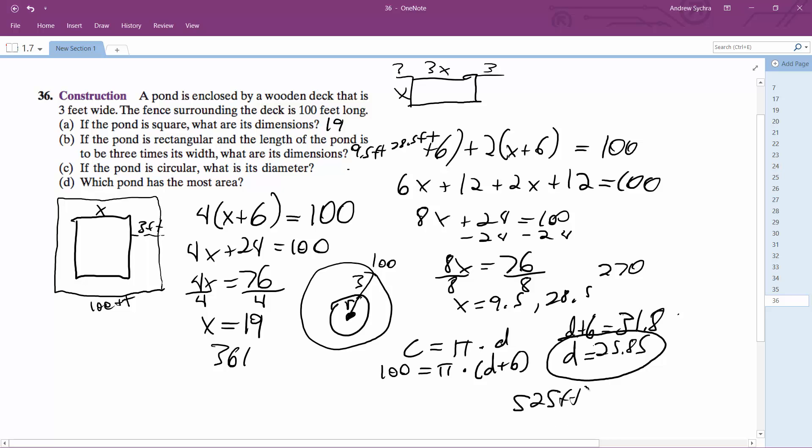Feet squared. So right, and then this is going to be 525, circular pond that has the most area. I hope that helps you. That's it.